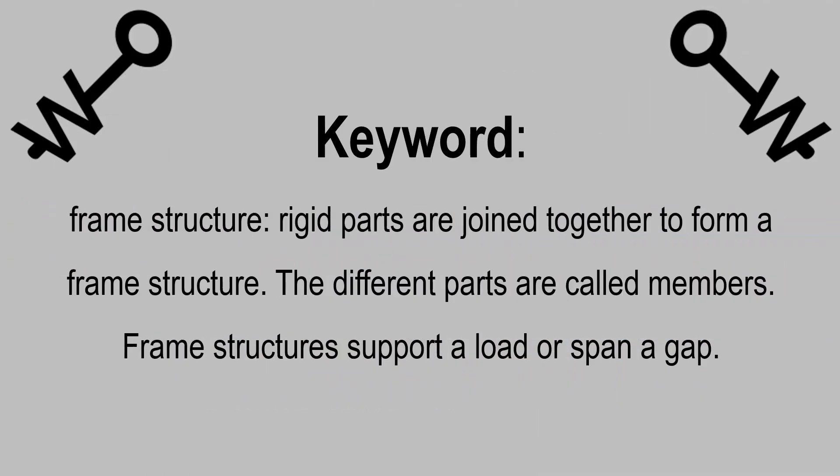Here's our first key word. Key words are important because they are almost always asked in tests to define words. Wherever you see 'define something', they're talking about a key word. And here we have frame structure: rigid parts are joined together to form a frame structure. The different parts are called members. Frame structures support a load or span a gap.